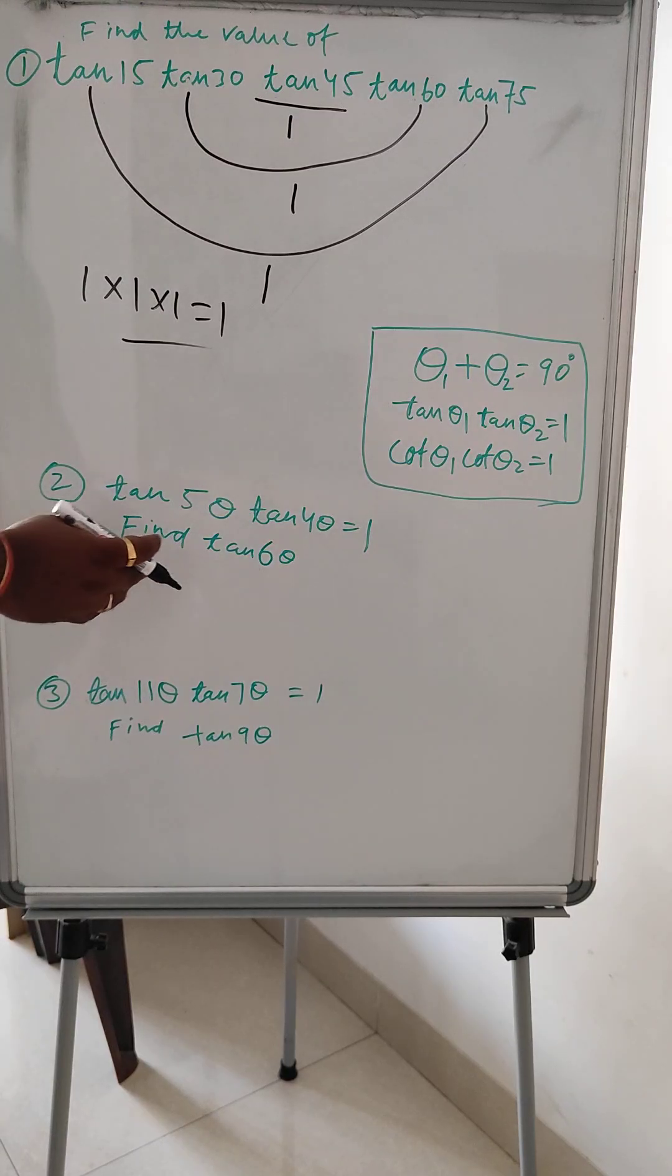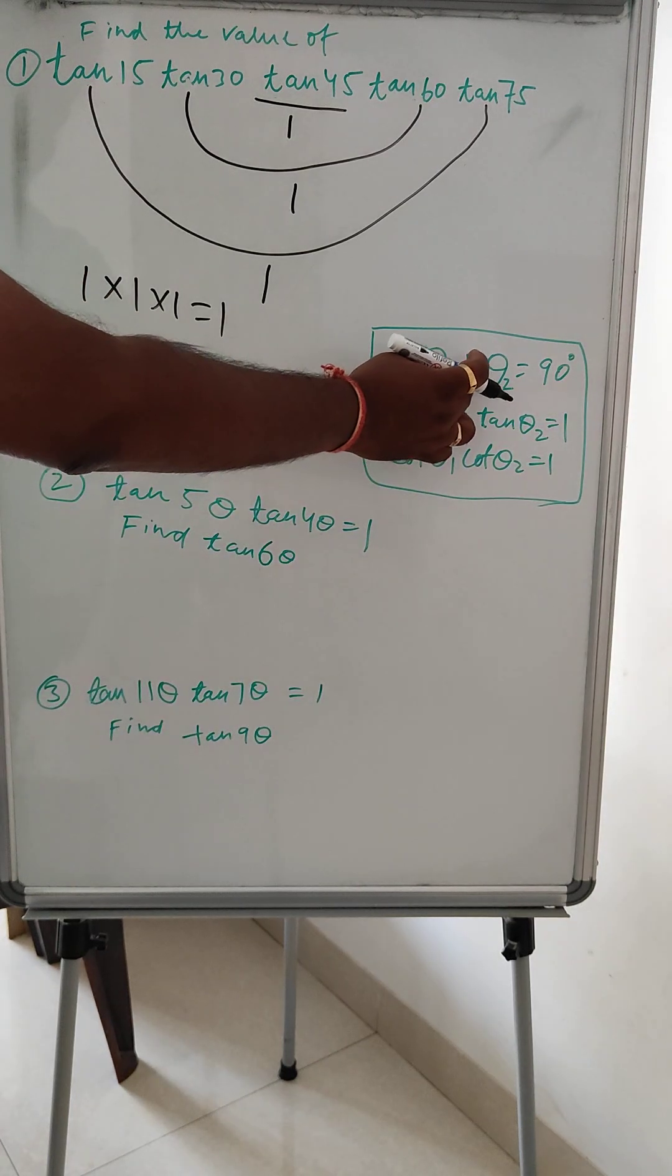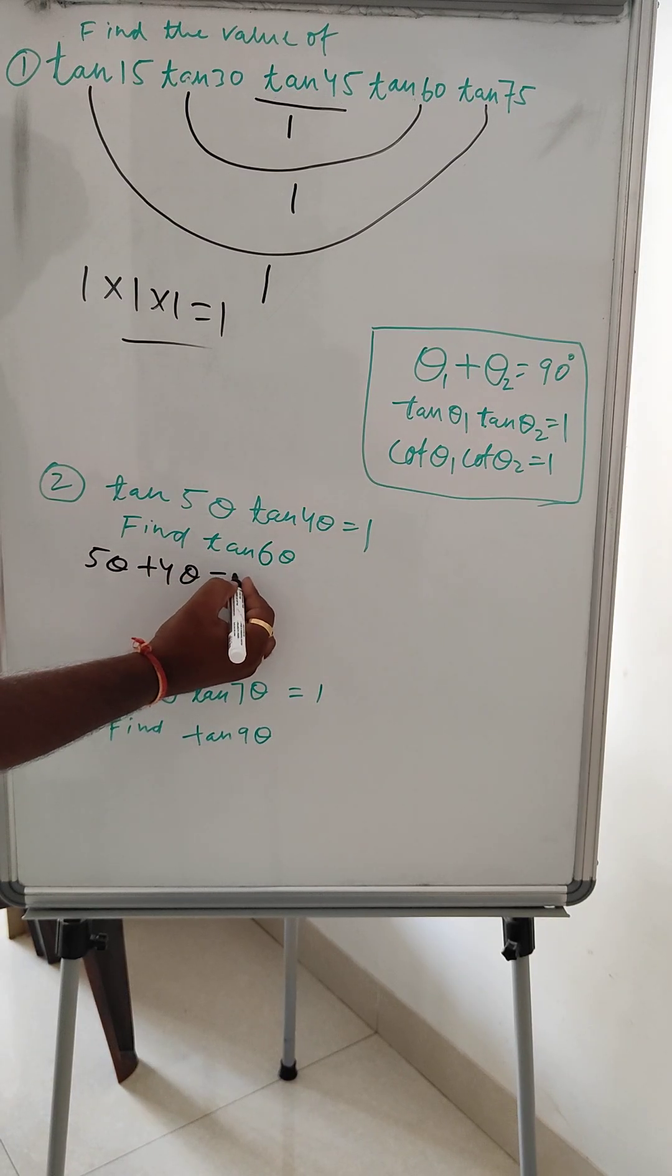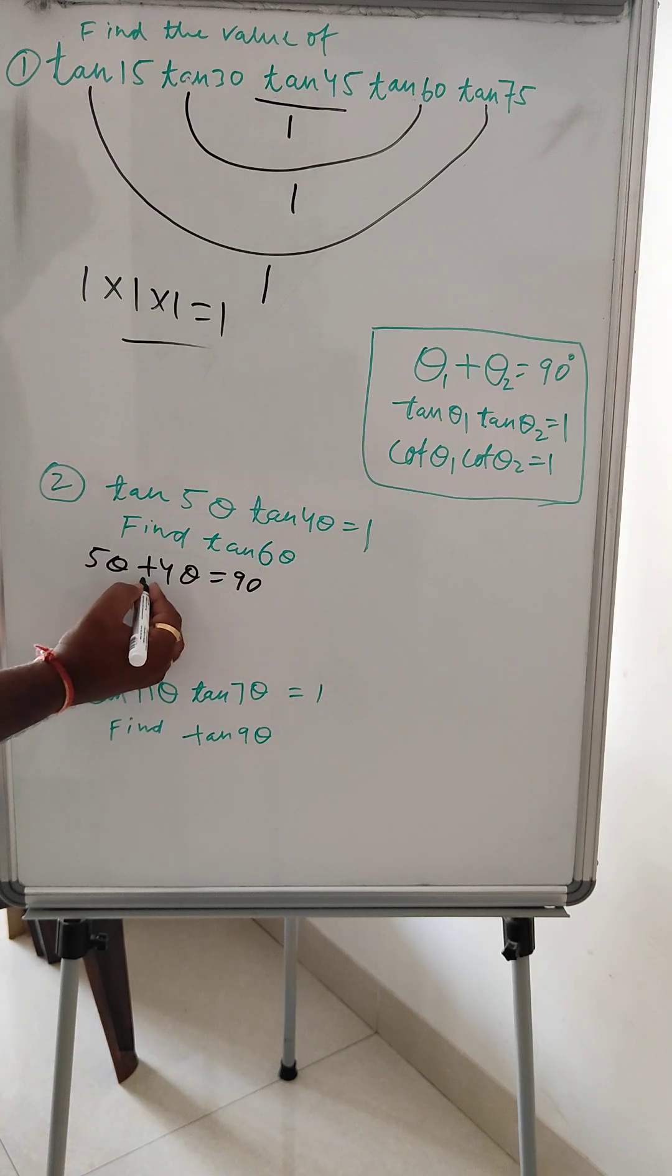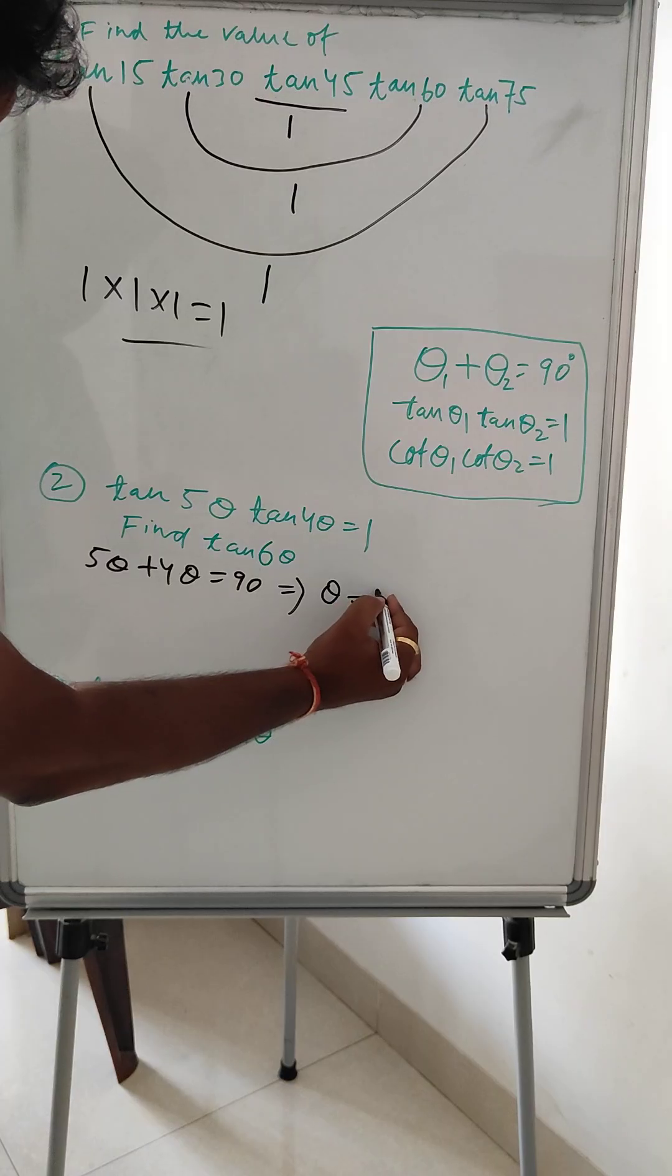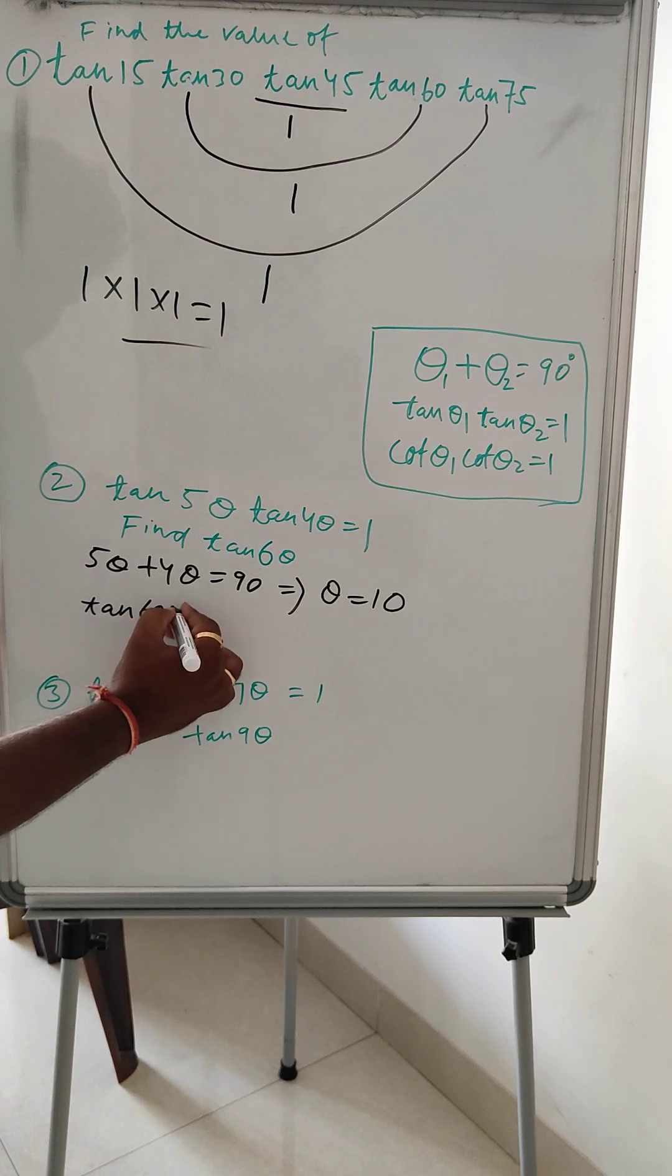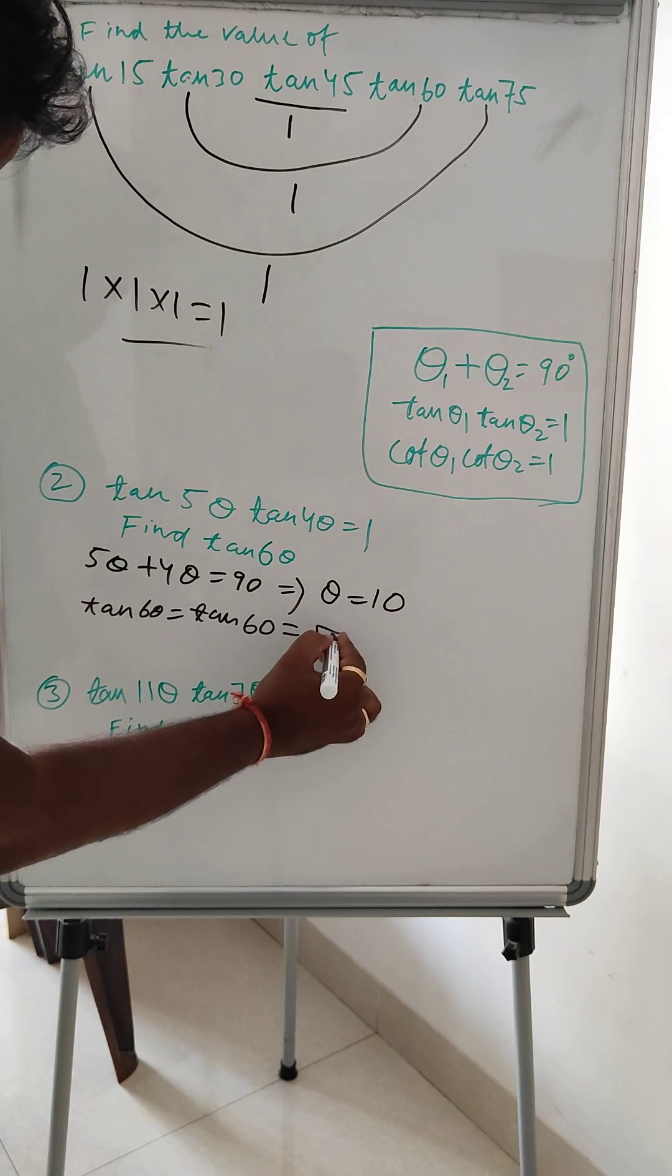Now these questions. Here, I know that tan θ1 × tan θ2 = 1 when θ1 + θ2 = 90°. Then 5θ + 4θ = 90°. From here, we have 9θ = 90°, so θ = 10°. This tan 6θ can be tan 60°, and tan 60° is √3. So the value of tan 6θ is √3.